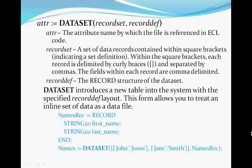One other type of dataset declaration is worth bringing to your attention: the inline dataset. The first parameter is a set of records. Notice the curly braces around each set element — curly braces mean RECORD and END. The second parameter names the record structure that defines the field layout. Inline datasets are used throughout the ECL documentation to provide fully functional example code. They are also very useful for testing and debugging code before running it against production datasets.